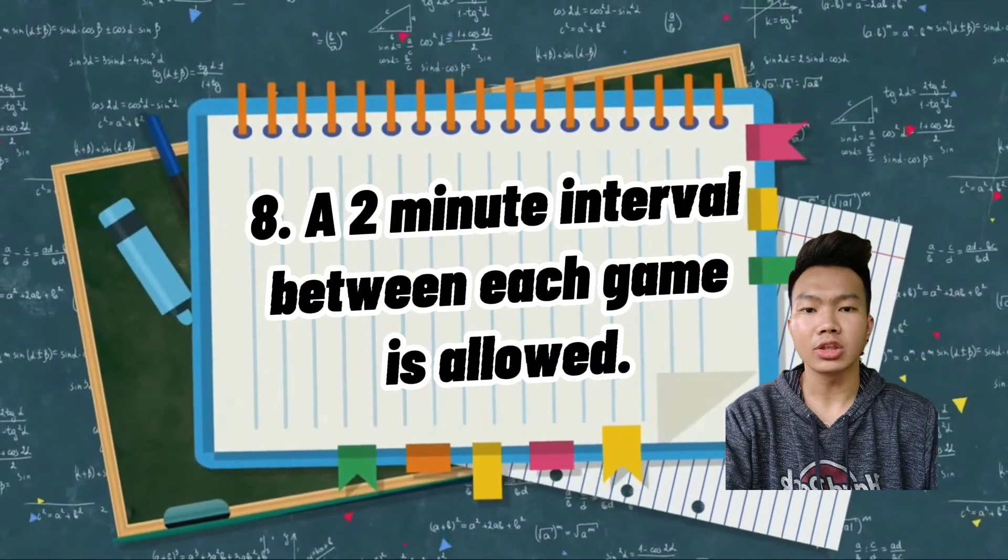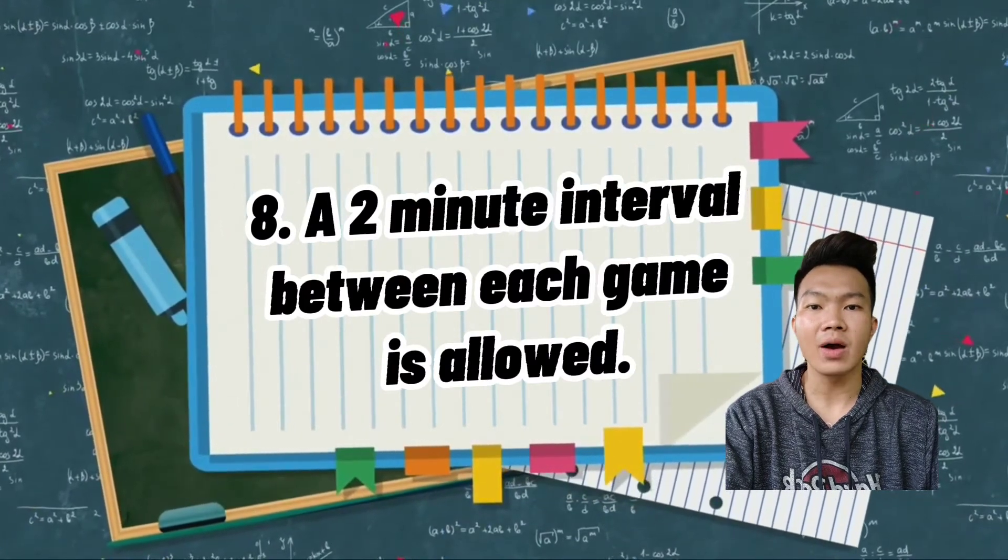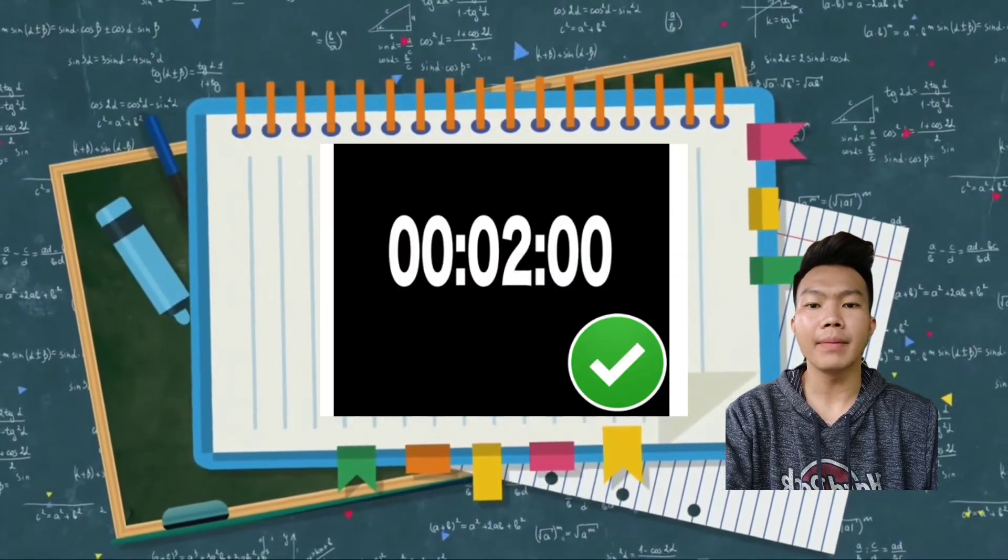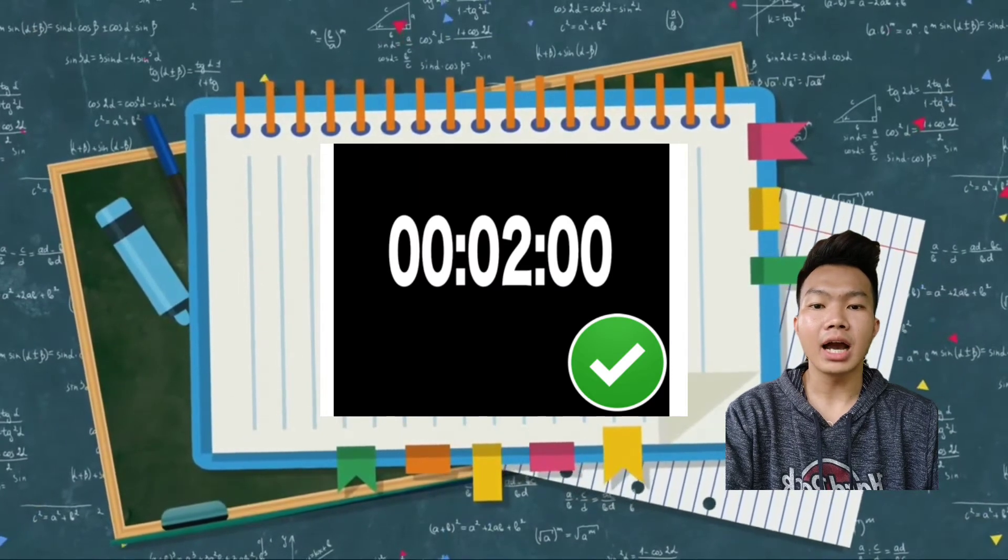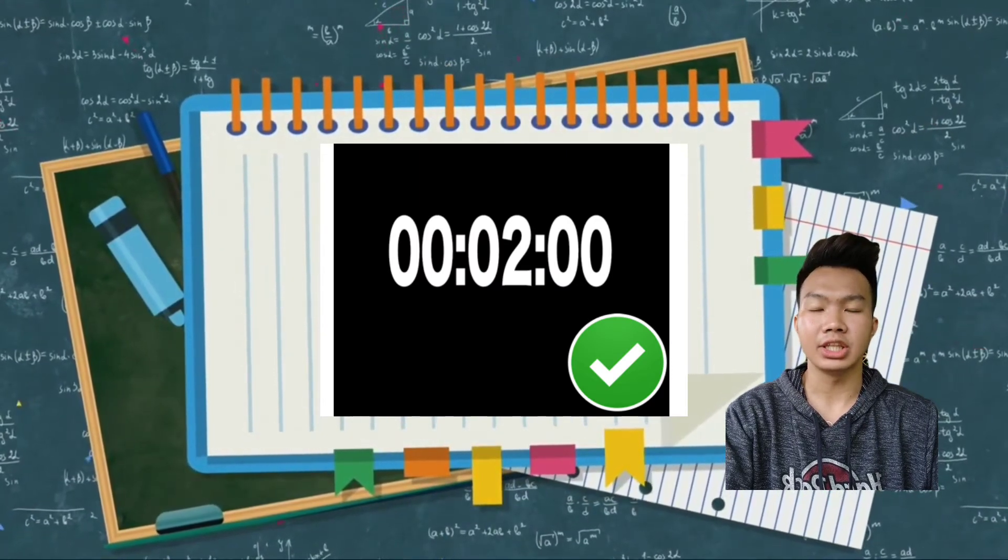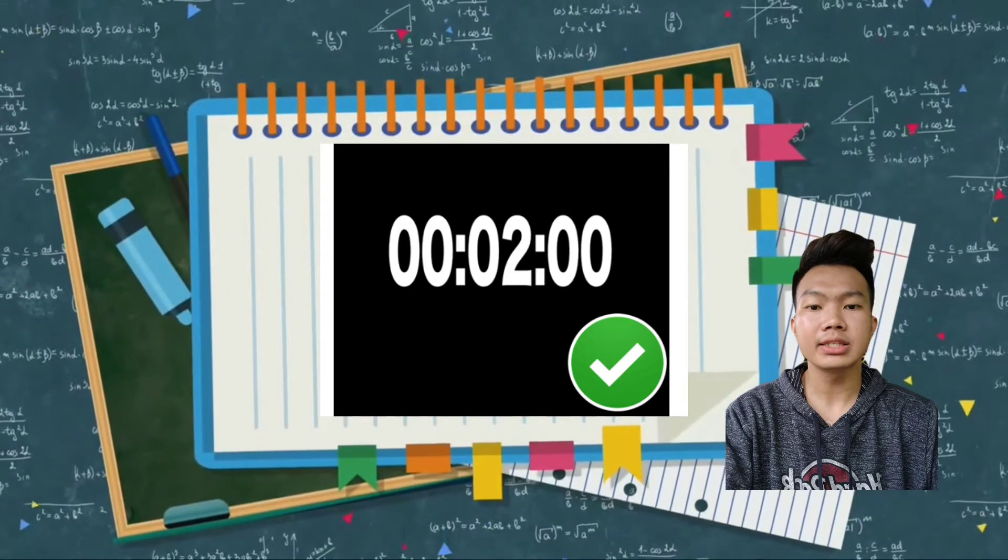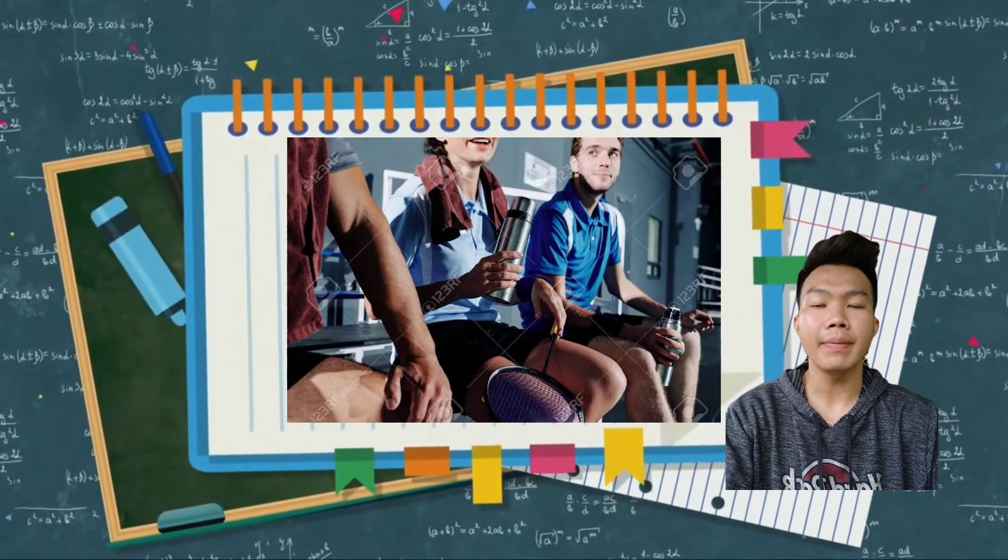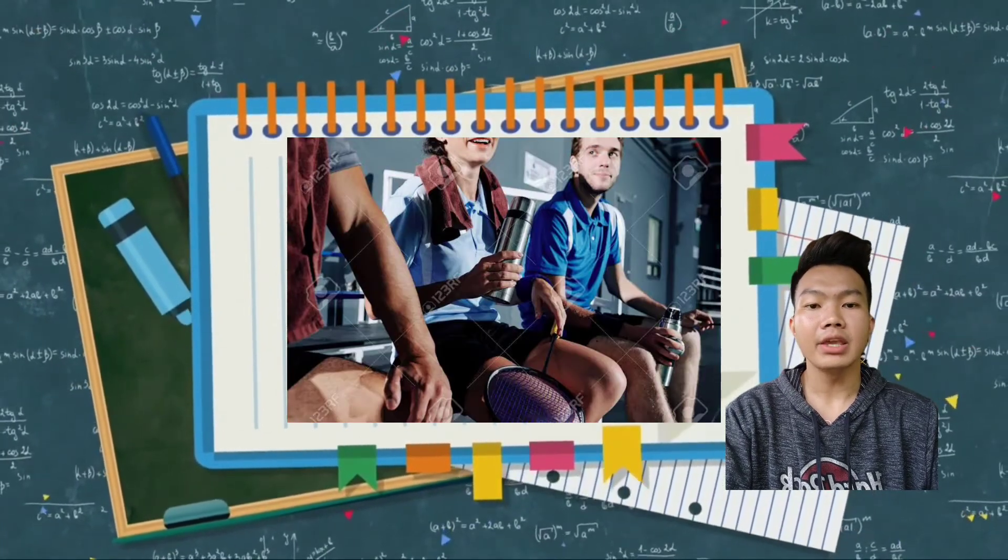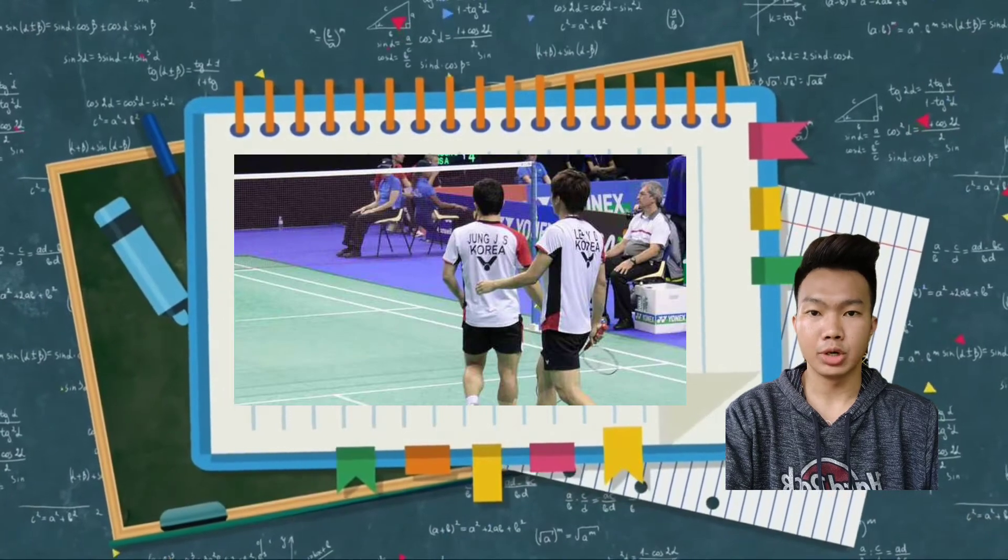Number eight, a two-minute interval between each game is allowed. Sa badminton, pagkatapos ng isang match, ay magkakaroon ng two minutes interval. Ang two minutes na ito ay ilalaan sa pagpapahinga ng mga player or for strategic purpose. It depends sa player or pair ang gagawin during that period.